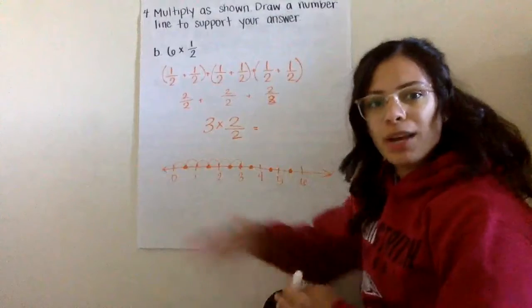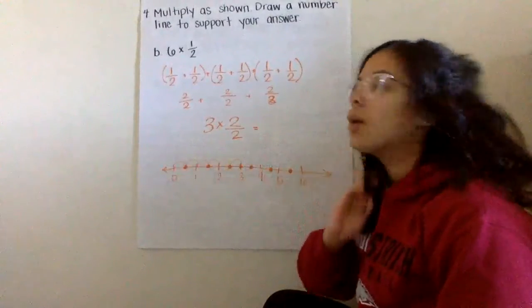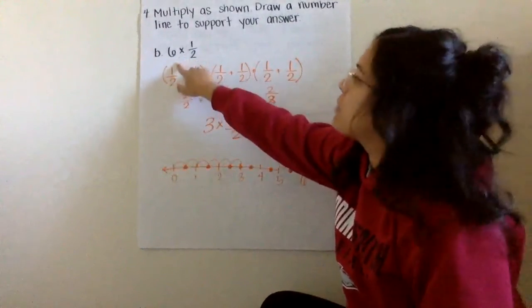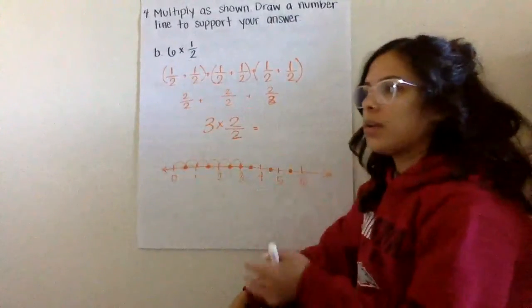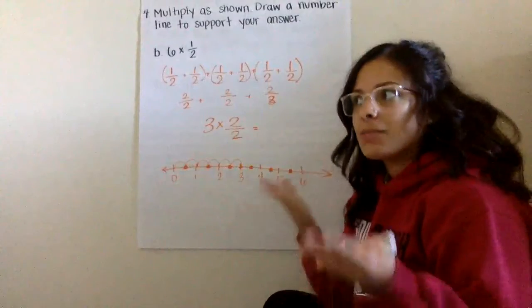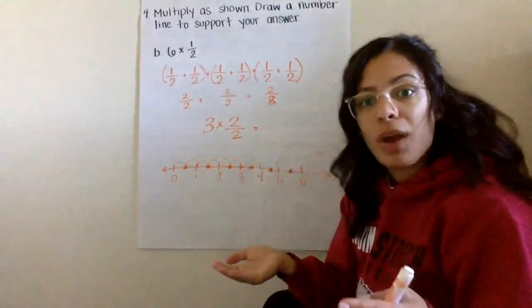I already started filling this in a little bit so I can just show you how that thinking works. So four B is what we're going to look at for your exit ticket. So we have 6 times 1/2. Now we know that multiplication and addition go hand in hand as multiplication is that repeated addition process, right?